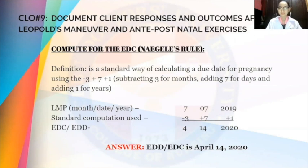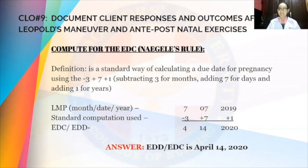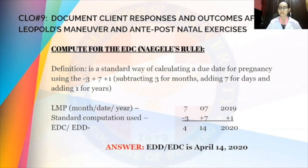And that is our EDC or EDD. So 4 is April. We have April 14, 2020, and that is the estimated date of delivery or estimated date of confinement using Naegel's rule.